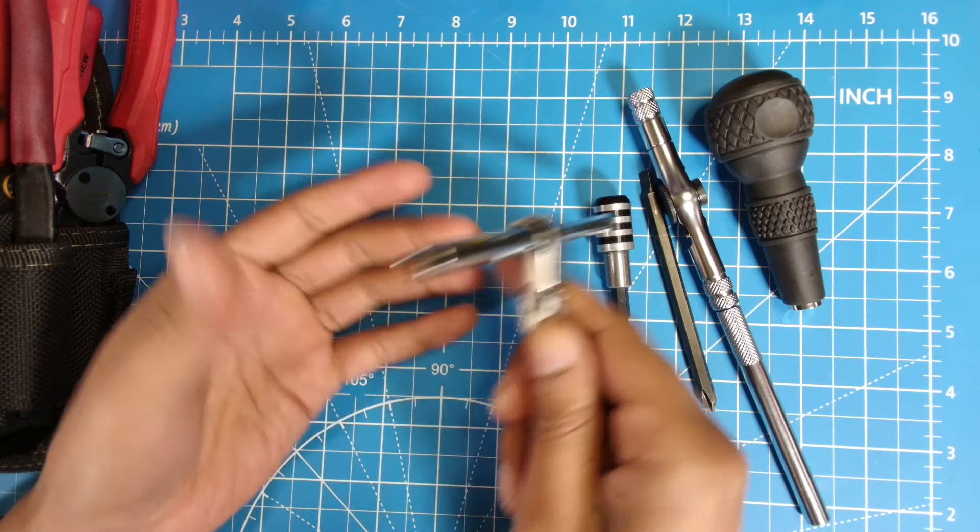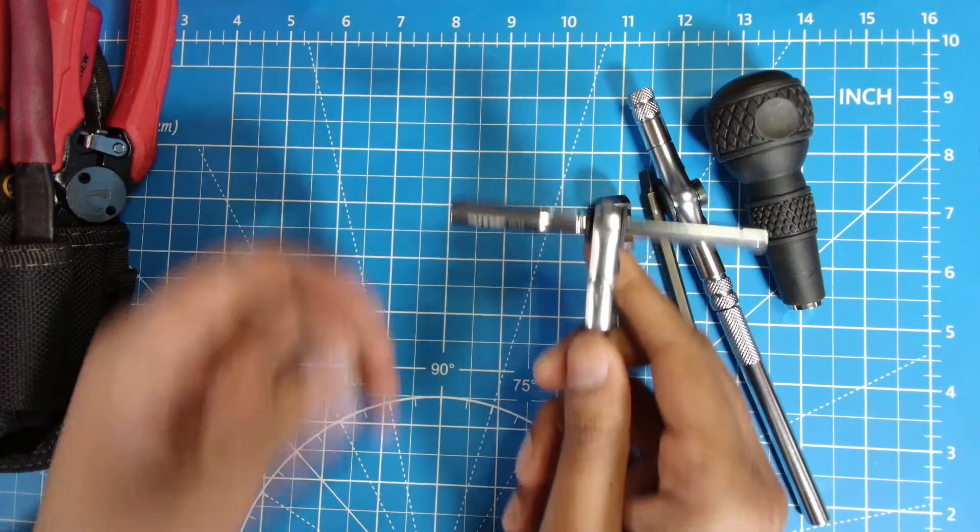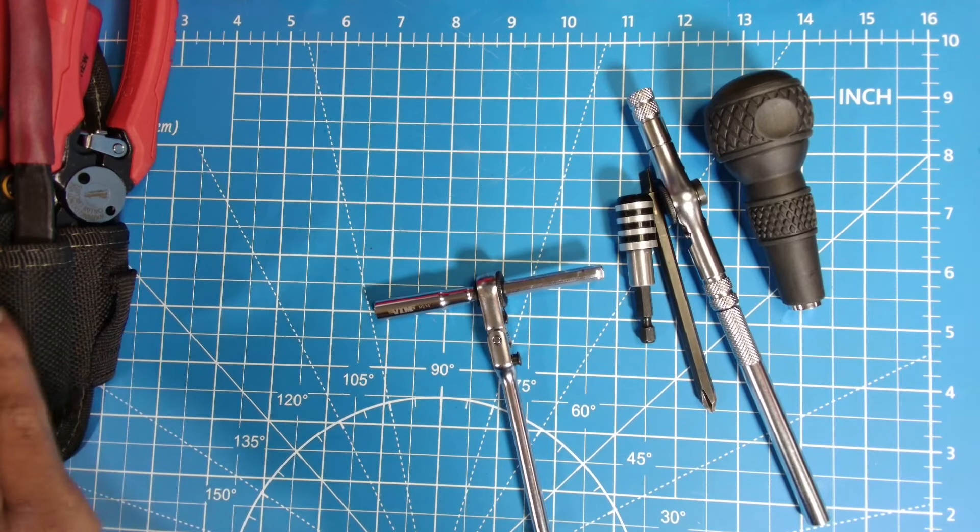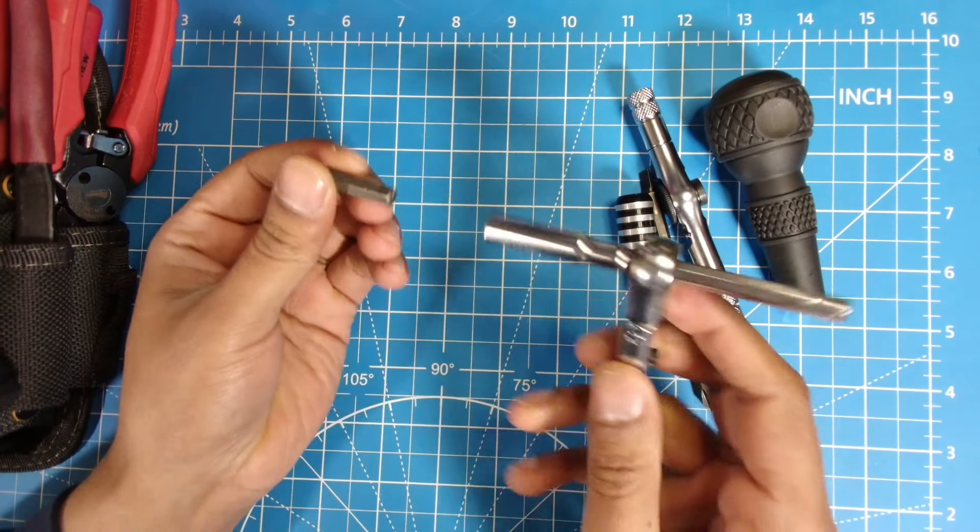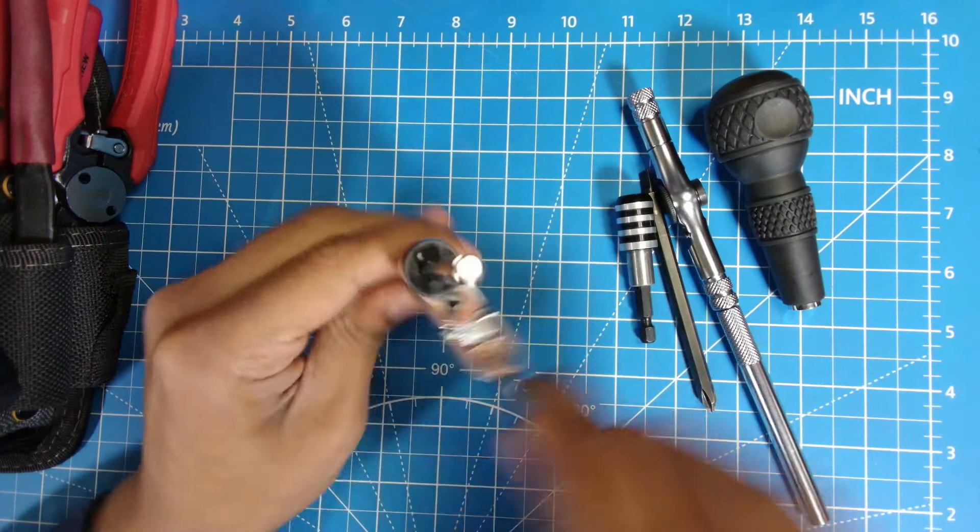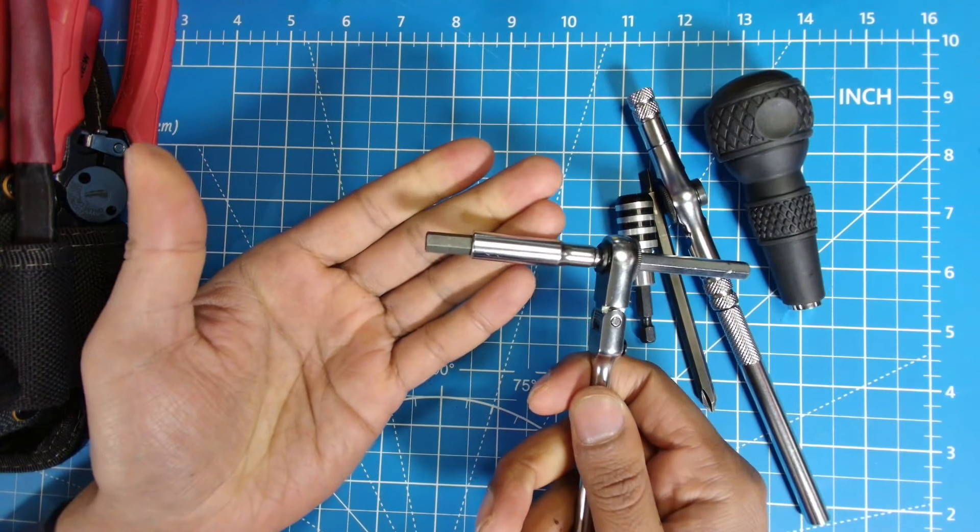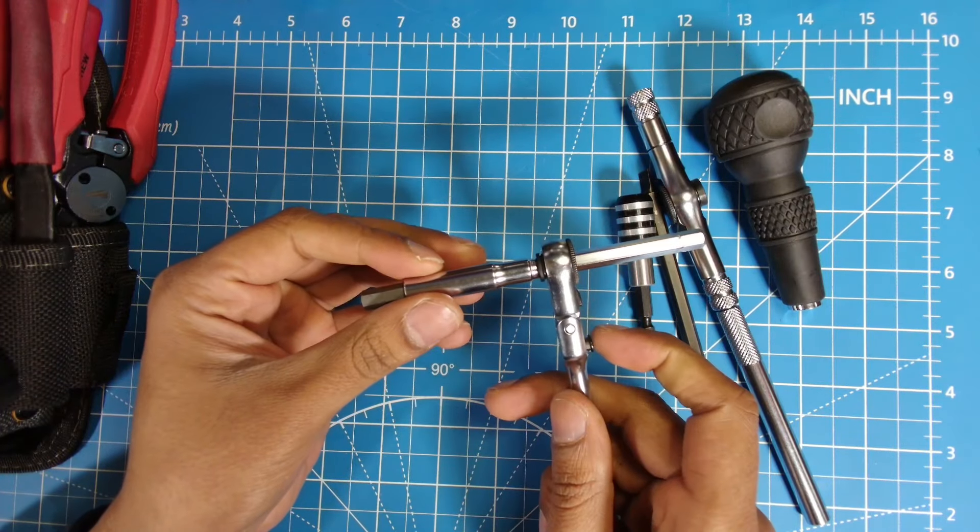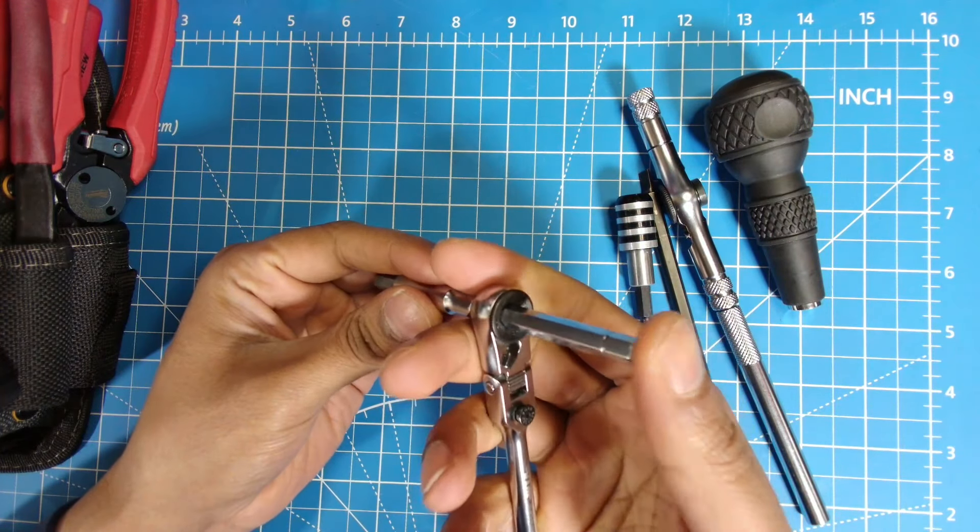So the main way I use this is just as is. I'll just take a bit, put it in. Let me get a bit out here, let me get the quarter inch bit because you know what, that'll come in handy later. Take the quarter inch bit, put it in there, now I can ratchet on a quarter inch hex bolt.